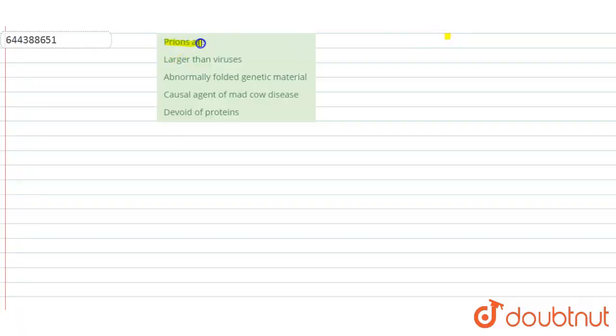The question is: prions are - options are: larger than viruses, abnormally folded genetic material, causal agent of mad cow disease, devoid of proteins.